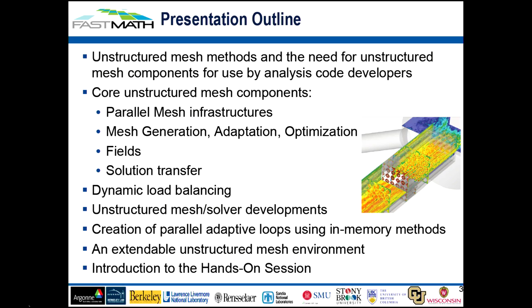How do we generate, adapt, and optimize the quality of meshes? How do we support the information associated with the solution of parameters on those meshes and coordinate their transfer as the mesh adapts? Also core within this process is taking advantage of the ease with which unstructured meshing techniques can perform very general adaptations. If we're going to be doing that, we need dynamic load balancing — also needed in multi-physics analysis because different solvers have different needs for maximum scalability and performance.